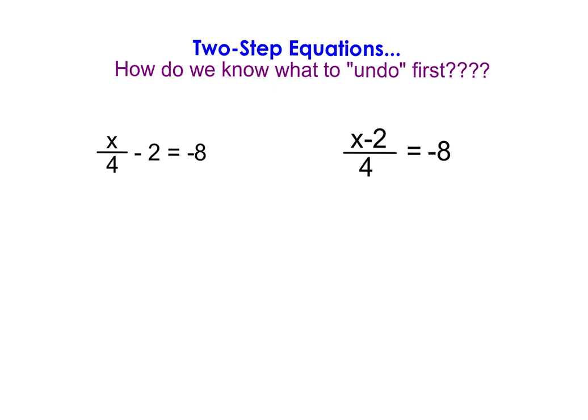Now let's look at another set of problems. You'll notice we have a division of 4 — that's what the fraction line represents. And we have a subtraction in each problem. The only difference is the placement of that subtraction of 2. In the problem on the left, it's placed next to the fraction. In the problem on the right, the negative 2 is part of the fraction. Mathematicians imply that if something is on top of a fraction together, there are implied parentheses there.